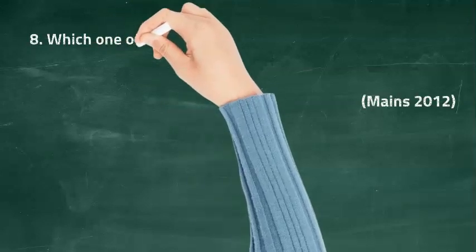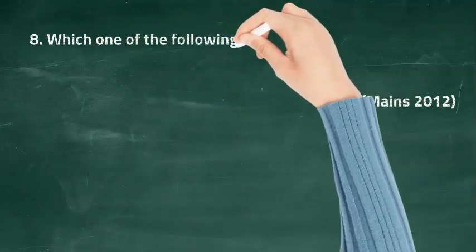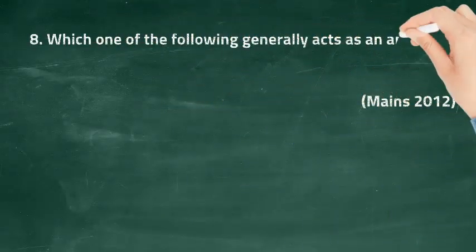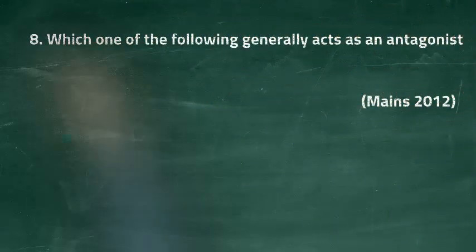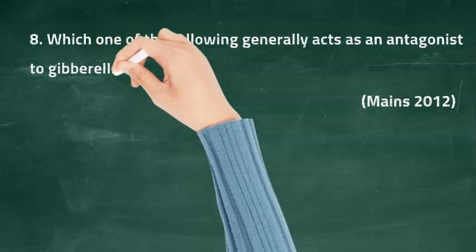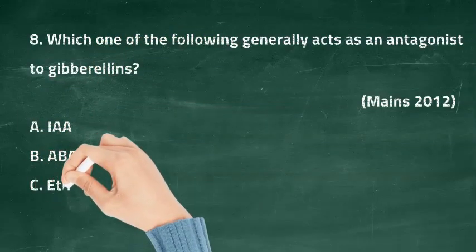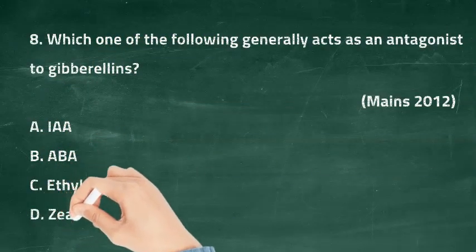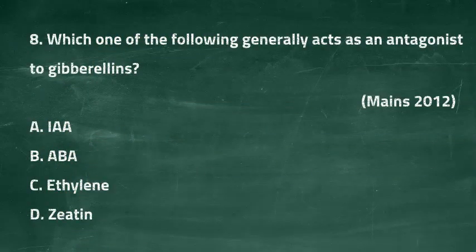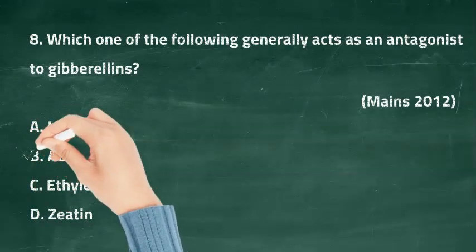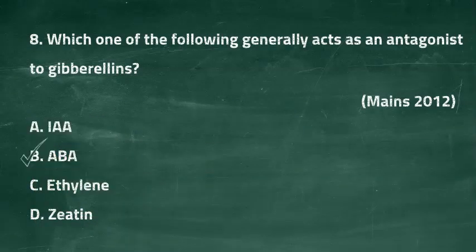Question eight: which one of the following generally acts as an antagonist to gibberellins? Option A: IAA, option B: ABA, option C: ethylene, option D: zeatin. The right answer is option B, ABA.